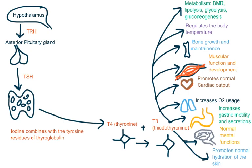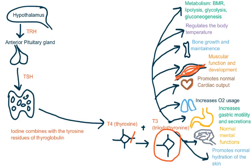T4, which is also called thyroxine, is known as T4 because it has four iodine molecules, and T3 has three iodine molecules. T4 is actually the inactive form — it is basically the store. T4 breaks one of its legs to form T3, and this T3 is the active form which then performs all the functions on the body.